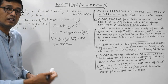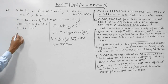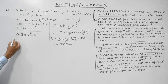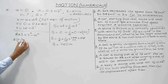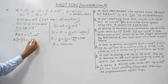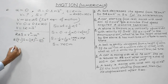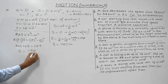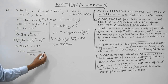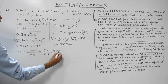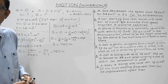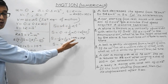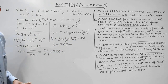We can also verify using the third equation 2aS = v² - u²: 2 × 0.1 × S = 12² - 0² = 144, so S = 144 / 0.2 = 720 meters. It is entirely up to you which of these two equations to use — both give the same result of 720 meters.